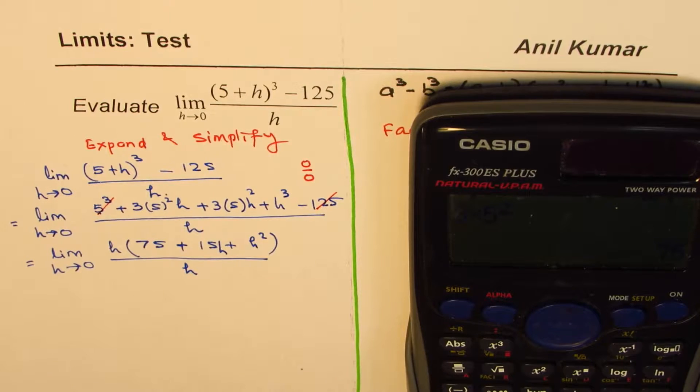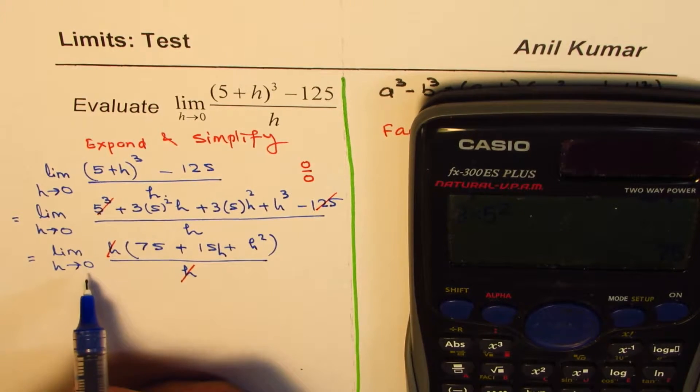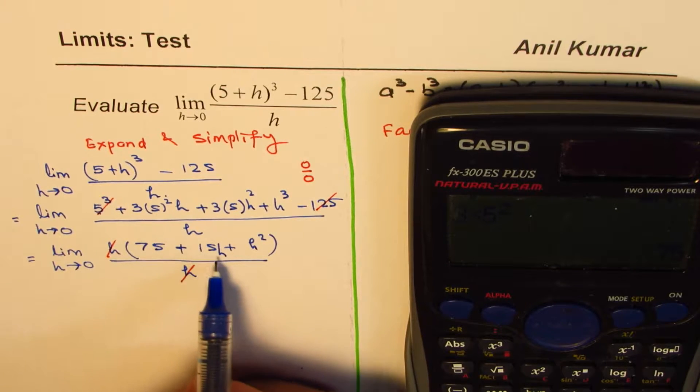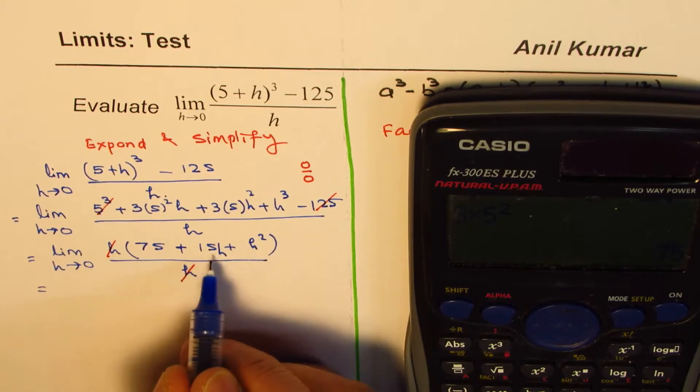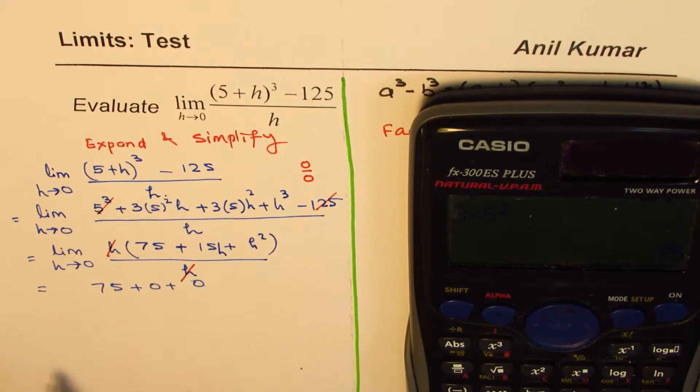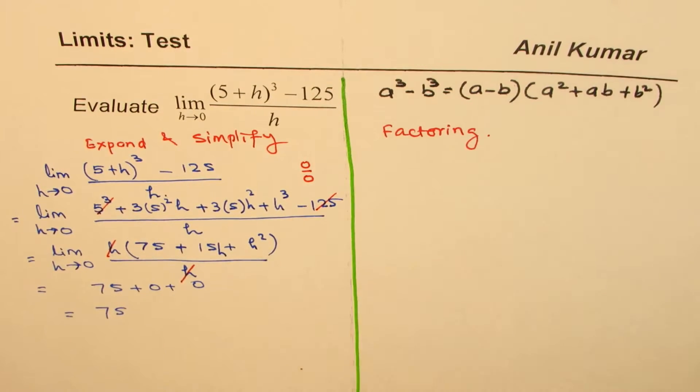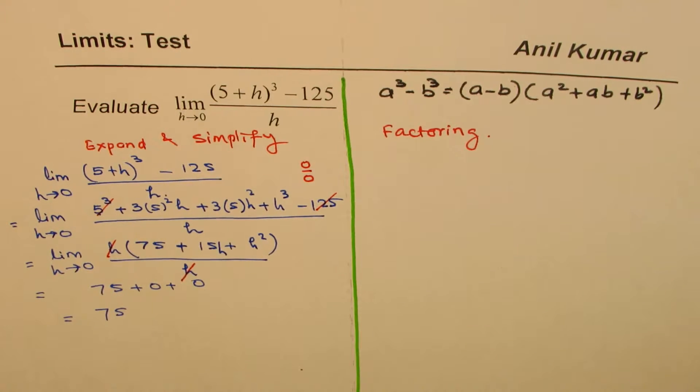Now, h and h cancel out, correct? So, we have limit h approaches 0 of 75 plus 15h plus h square. So, if I substitute 0 here, I get 75 plus 0 plus 0, and that is indeed equals to 75. And therefore, the limit of this function is 75.